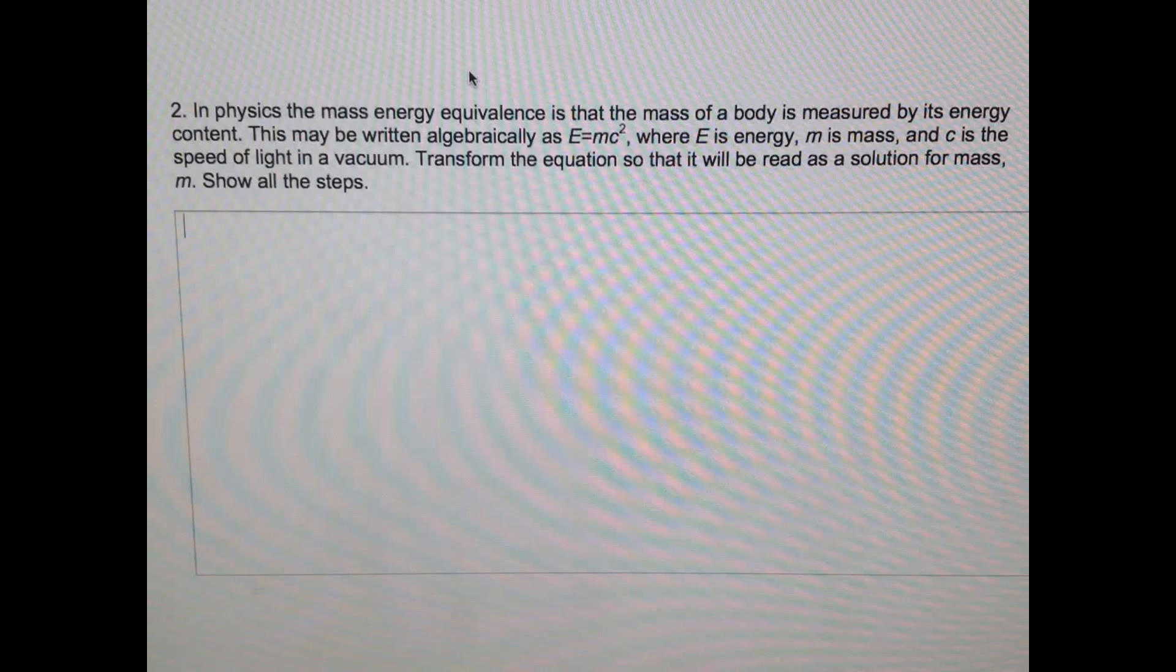In this problem, in physics the mass energy equivalence is that the mass of a body is measured by its energy content. This may be written algebraically as E equals mc squared, where E is energy, m is the mass, and c is the speed of light in a vacuum. Transform the equation so that it will read as a solution for mass, and show all the steps.